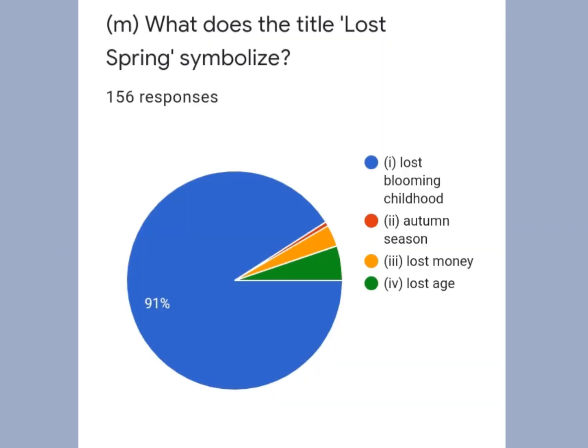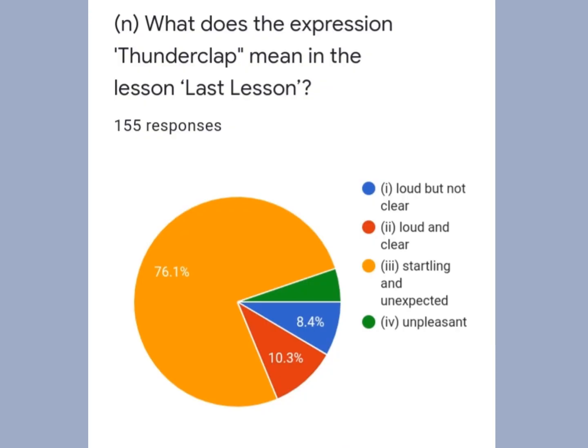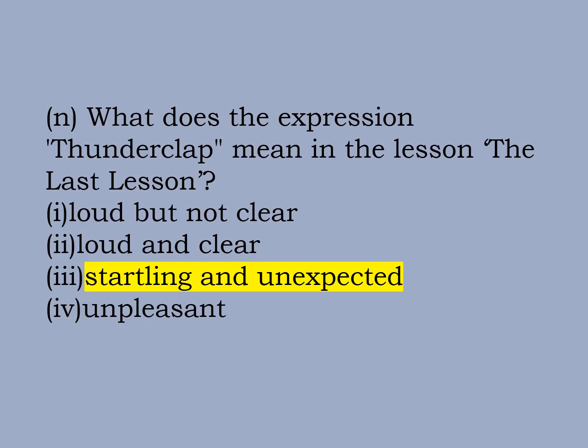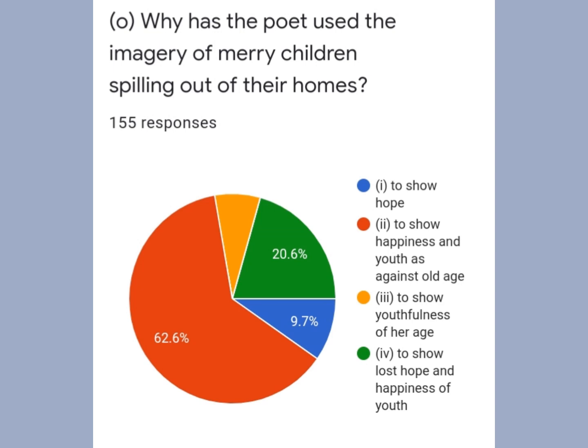This is Question 4, M part. What does the title 'Lost Spring' symbolize? Most students opted for the correct option, option 1: the answer is lost blooming childhood. Question 4, N part: what does the expression 'thunderclap' mean in the lesson 'The Last Lesson'? The correct answer is option 3: startling and unexpected.